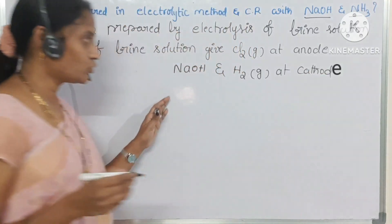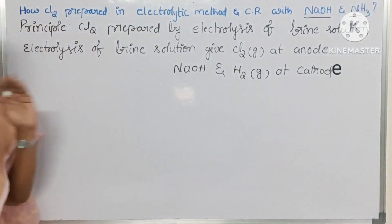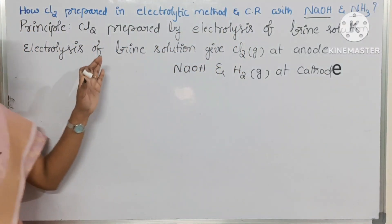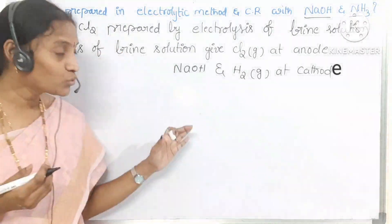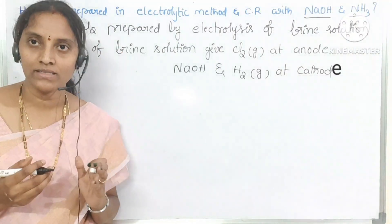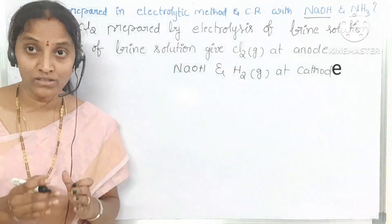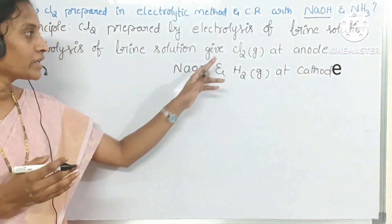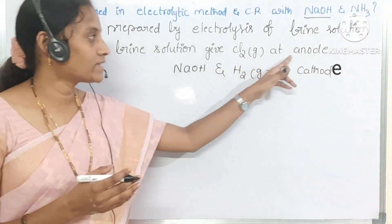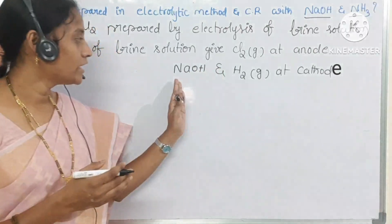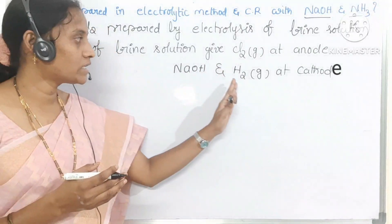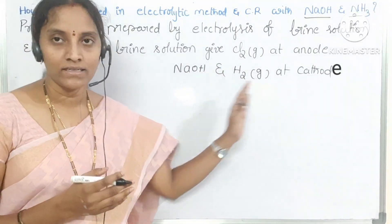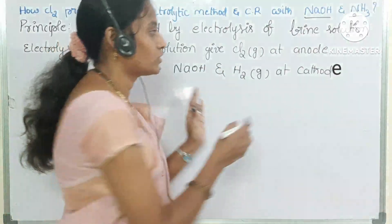These two products will be formed while doing electrolysis of brine solution: Cl₂ gas at the anode, and NaOH and H₂ gas at the cathode.